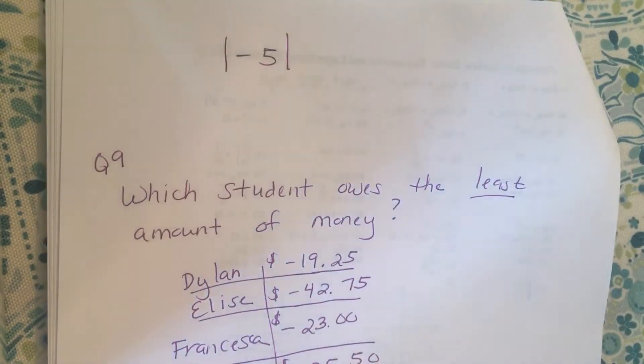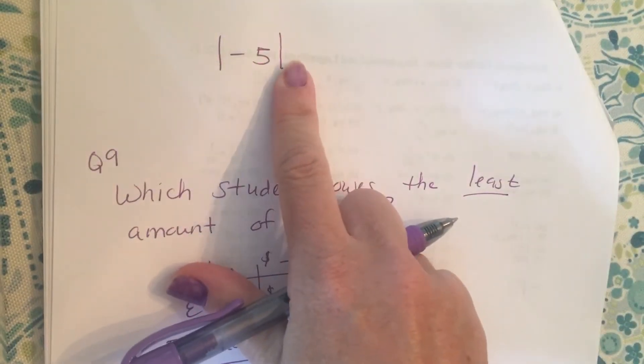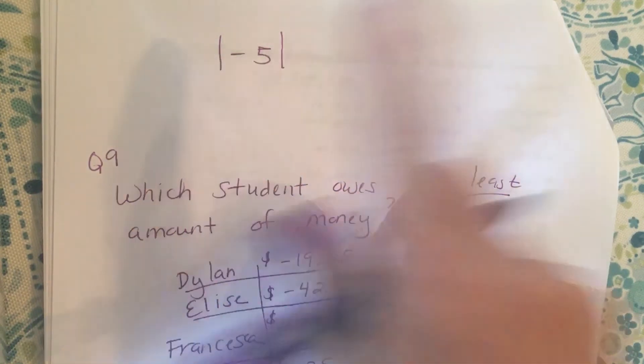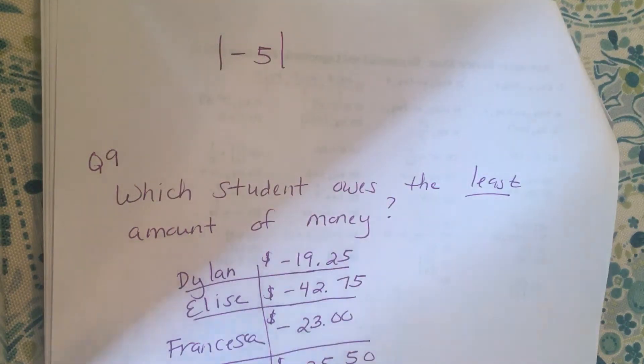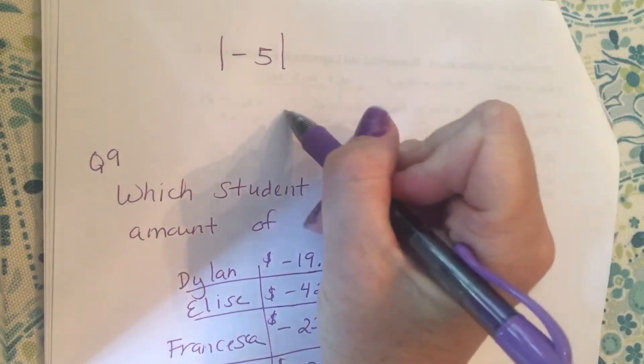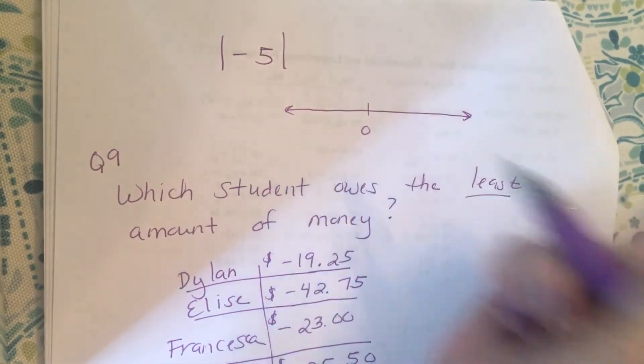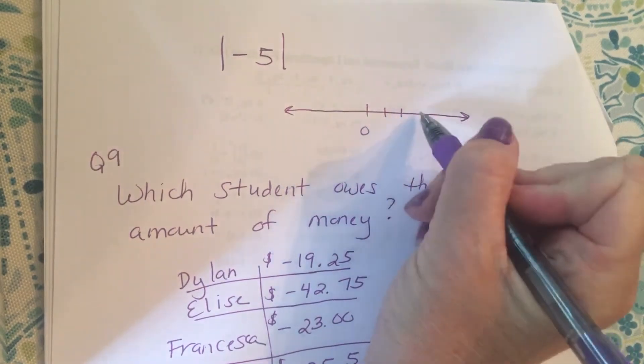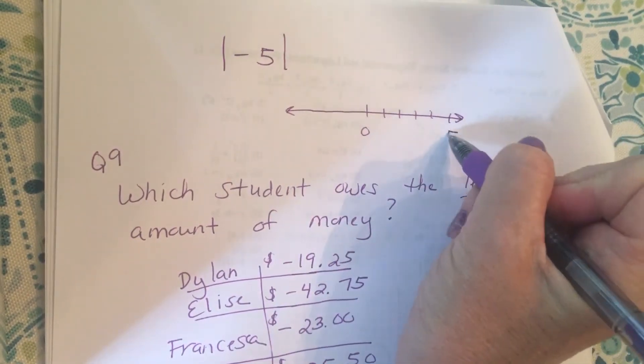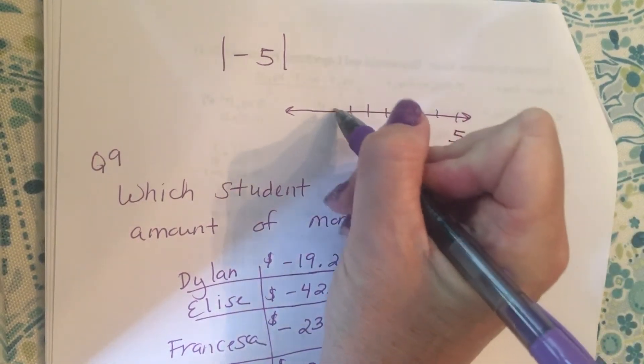Okay, so that symbol means absolute value. An absolute value just means the number's distance from zero. On a number line, if I have zero here, and one, two, three, four—this is positive five. One, two, three, four—here's negative five.